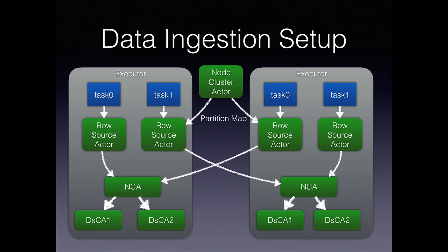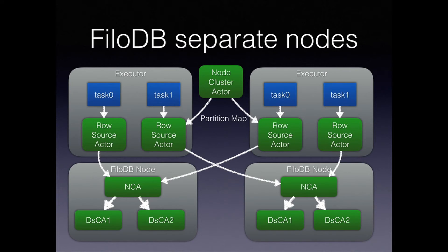Data comes in at the top into a row source actor that uses a partition map to route data to the right node and process it. One really nice thing about using actors here is that in the future if we want to change the architecture — say, separate ingestion logic to a separate JVM — we don't need to re-architect the app at all. We just change the actor configuration and where actors are started, and they get sent over the network. You'd want to tune Java serialization to something faster, but fundamentally it's a very powerful model for building distributable applications.